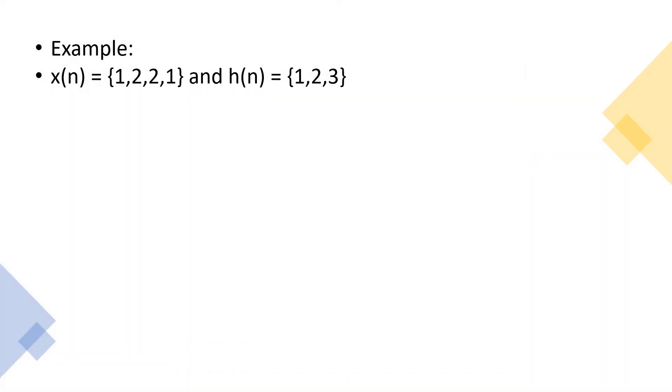Now let's try to understand the topic using an example. Here we need to determine the response of the linear filter with input sequence x of n equal to 1, 2, 2, 1 and impulse response h of n equal to 1, 2, 3. The input sequence has length L equal to 4 and impulse response has length M equal to 3. The linear convolution of these two sequences produces a length N equal to 6.